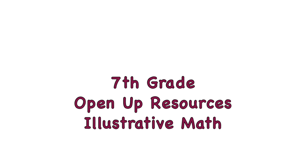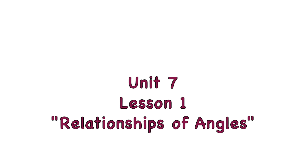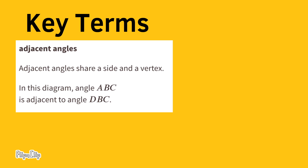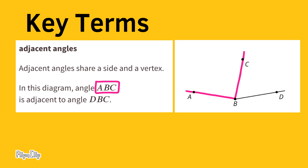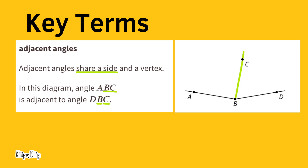7th grade Open Up Resources Illustrative Math, Unit 7, Lesson 1: Relationships of Angles. Key terms: adjacent angles share a side and a vertex. In this diagram, angle ABC is adjacent to angle BDC. The side these two adjacent angles share is line segment BC, and the vertex they both share is located at point B.